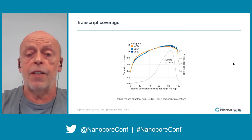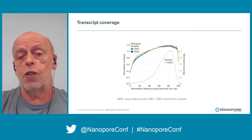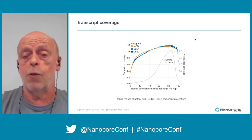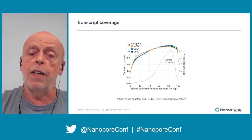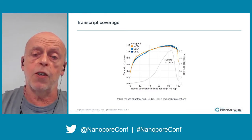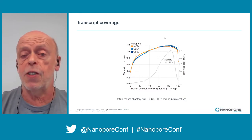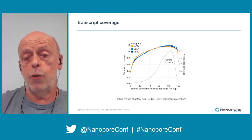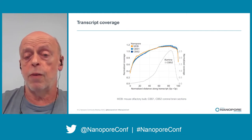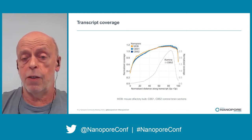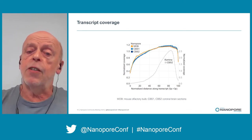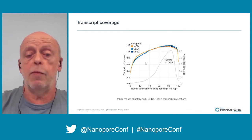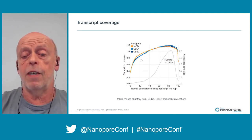The transcript coverage looks rather good. There is pretty nice 5' coverage, with some decrease towards the 5' end mainly due to degradation during permeabilization. But you obtain much more, far more 5' information than with the Illumina data.